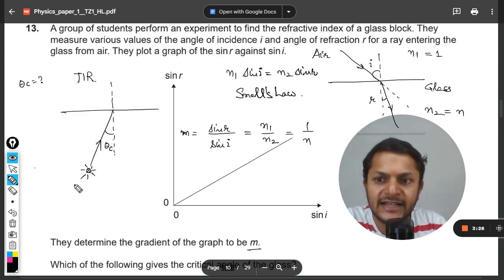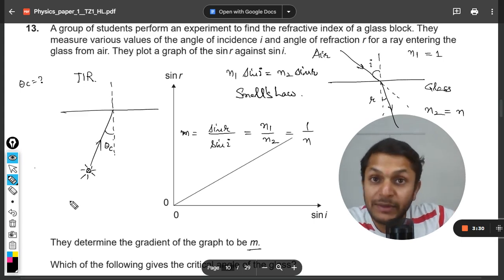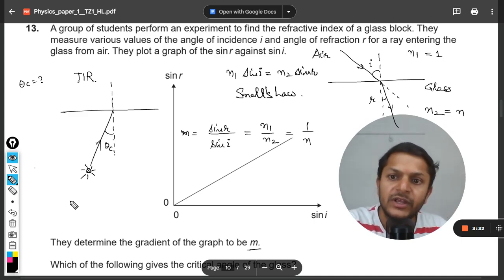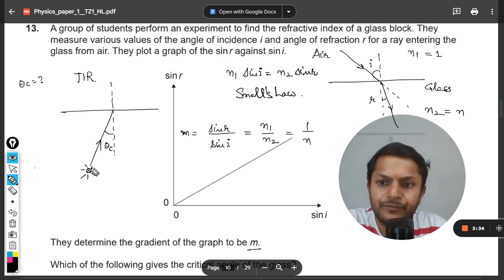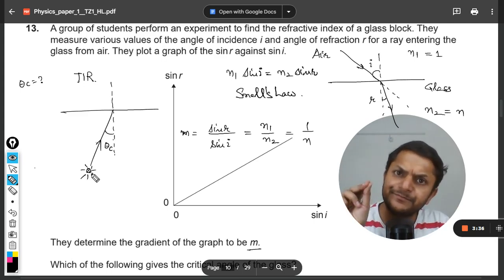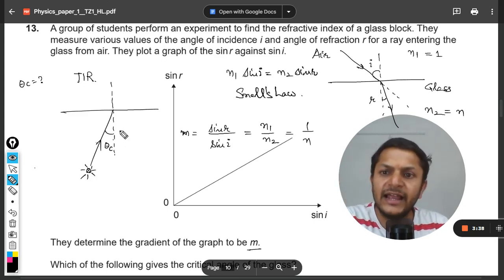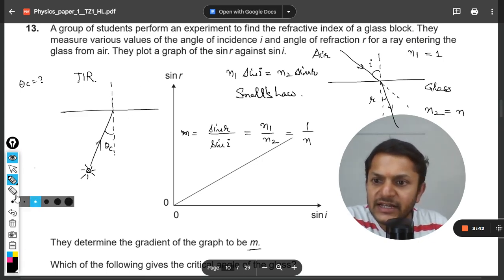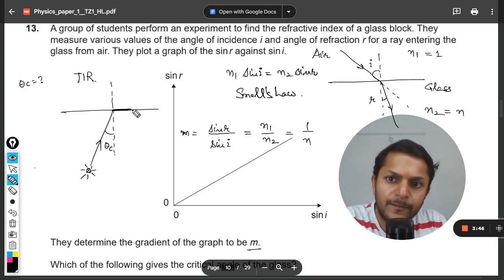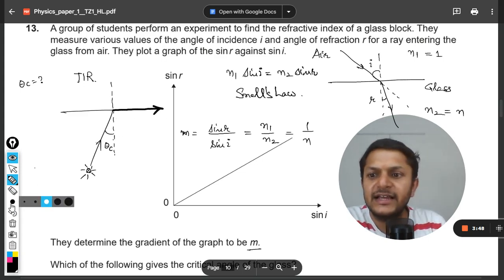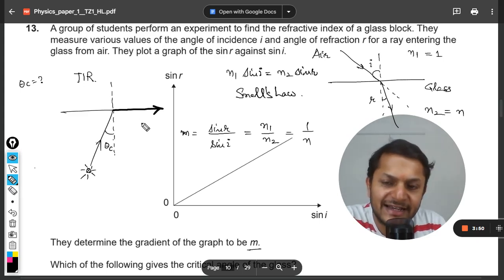TIR happens only when the light source is in the denser medium, like as if there is a bulb under the swimming pool, under the water. Okay, so this is your source which is producing the light, and light is trying to get out of this. So what happens is that eventually this light goes like this. This is known as grazing angle.